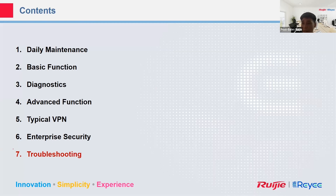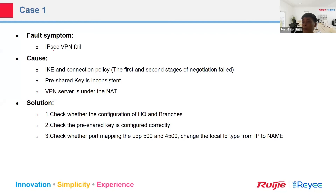The last part of the router training is troubleshooting. The first case is IPSec VPN failure. What happened? The first possible cause may relate to the connection policy and IKE. The second thing may relate to the pre-shared key.